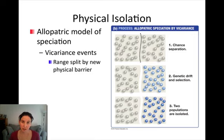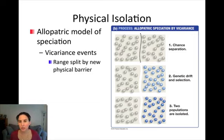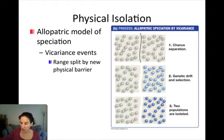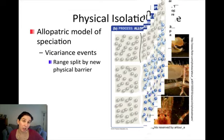Another way that allopatric speciation can happen is by a vicariance event — literally a range split by some sort of physical barrier. You can imagine this happening slowly, say with continental drift, or more rapidly, say with a lava flow coming in between two populations of snails and cutting off and isolating those two populations. This is an excellent mechanism of allopatric speciation.